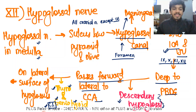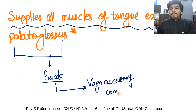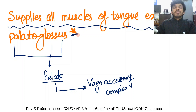The hypoglossal nerve then goes on the lateral surface of the hyoglossus muscle and supplies all the muscles of the tongue — all muscles except one: the palatoglossus. The palatoglossus has the word 'palate' in it, and it is supplied by the nerve supply of the palate, that is the vagoaccessory complex. So all muscles of the tongue are supplied by the hypoglossal nerve except the palatoglossus. This is a very high-yield fact: palatoglossus is the only muscle of the tongue not supplied by the hypoglossal nerve.